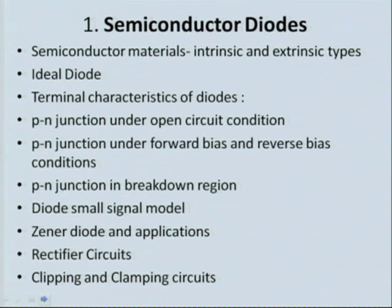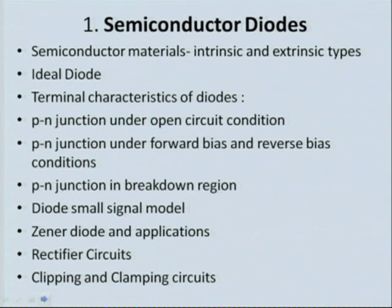For example, under semiconductor diodes there will be various subtopics. First of all, as I said, semiconductor materials — intrinsic and extrinsic. Then the ideal diode, the characteristics like VI characteristic of PN diode, and the characteristics under open circuit condition as well as when you are biasing the PN diode with forward and reverse bias. And then what will happen under breakdown, and we will also discuss the small signal equivalent model of the diode as well as general diode and its applications. We will also discuss the application of diodes in various circuits like clipping circuit, clamping circuit, and rectifier circuits.